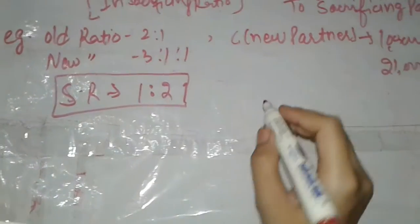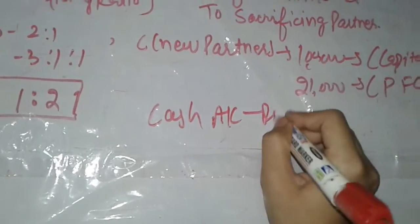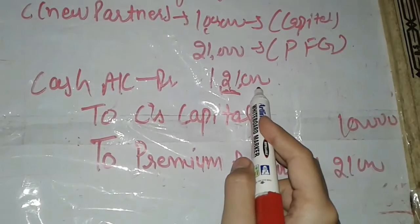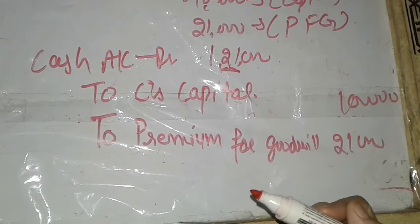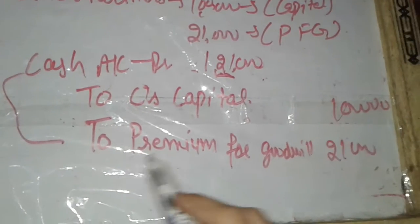After calculating the sacrificing ratio, we pass the necessary journal entries. C brings two things: 1 lakh for his capital and 25,000 for old partners as premium for goodwill. Total cash brought into the business is 1 lakh 25,000. The first entry is: Cash Account debit 1,25,000; to C's Capital Account 1,00,000; to Premium for Goodwill Account 25,000.